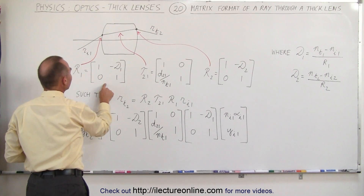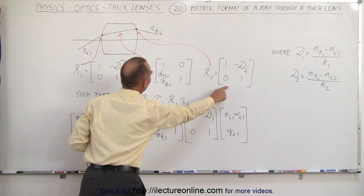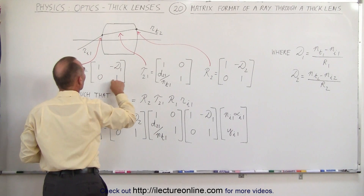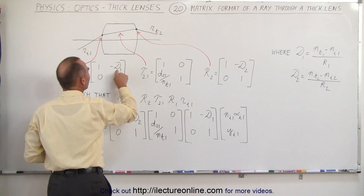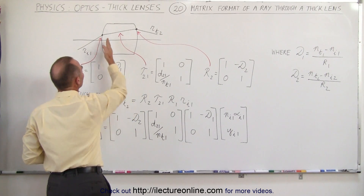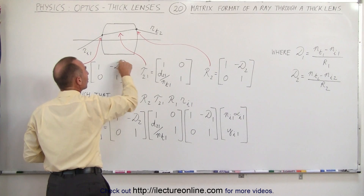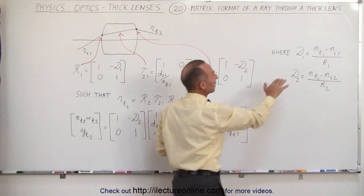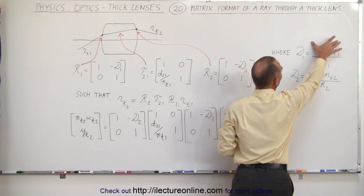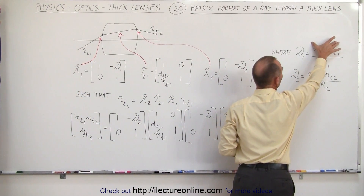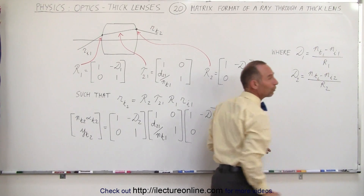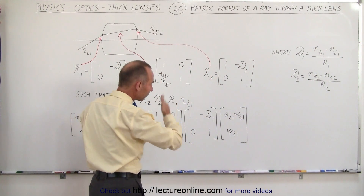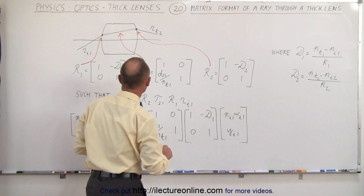The refracting matrices always look exactly the same. We have a 1, 0, 1 structure, and a minus D1, which is the power of the first boundary — indicating the difference of indices of refraction across the boundary divided by the radius of curvature of the front side of the lens.